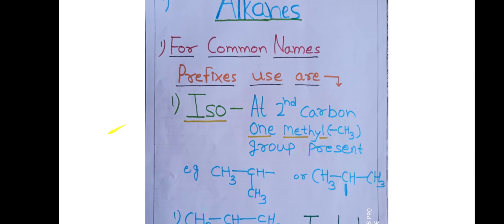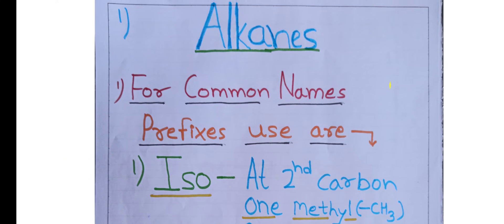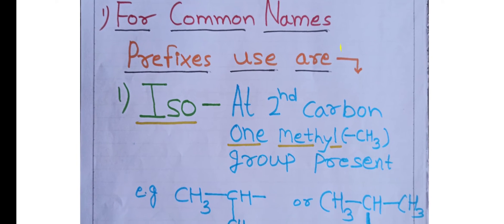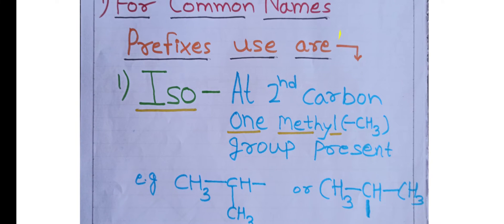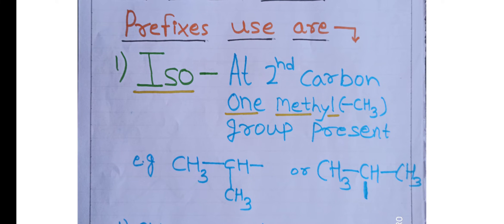The common names of alkanes depend on the classification of alkanes. Alkanes are classified as branched alkanes and straight chain alkanes. Branched alkanes are further classified as isoalkanes and neoalkanes. For an isoalkane, at the second carbon there is one CH3 (methyl) group — the condition is CH3-CH-CH3 — and we use the prefix 'iso'.